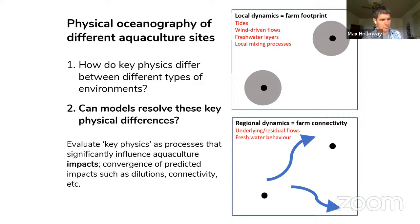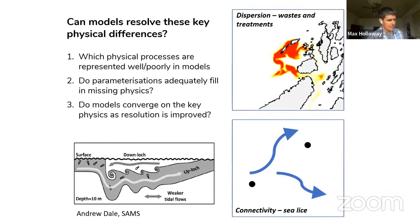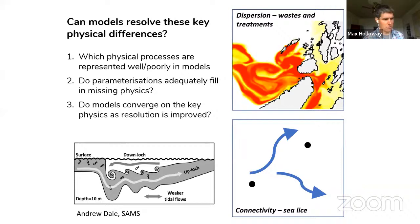A key question is: what physics are relevant to aquaculture? We define key physics as the processes that significantly influence aquaculture impacts — dilution of waste, connectivity between farms. We split these into local dynamics, which influence the immediate footprint of the farm site — tides, wind-driven flows, freshwater layers, local mixing — and larger regional dynamics which influence connectivity between farms, including underlying residual flows and freshwater behavior. The hypothesis is that as model resolution and complexity increase, simulations will converge on these key aquaculture-relevant physics.